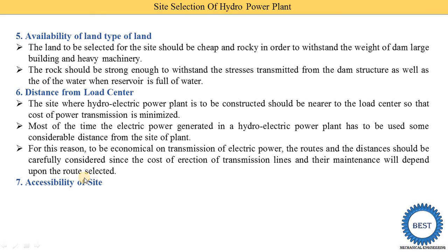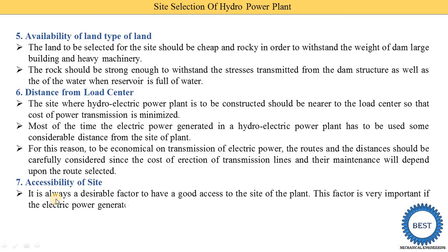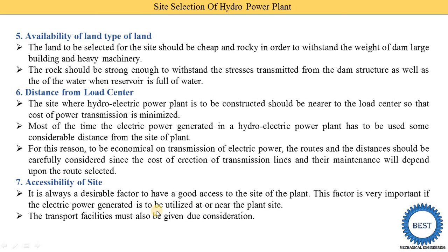The last point is the accessibility of site. It is always desirable to have good access to the site of the plant, and this factor is very important if the electric power generated is to be utilized at or near the plant site. Transportation facilities must also be given due consideration because to supply different concretes, sand, steel, and various machineries required for construction, we require proper accessibility of the site.